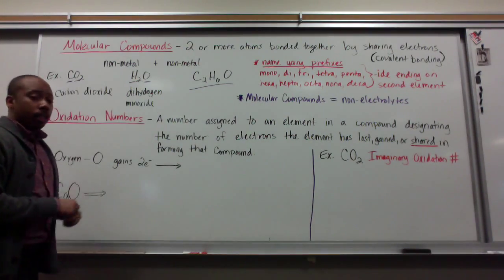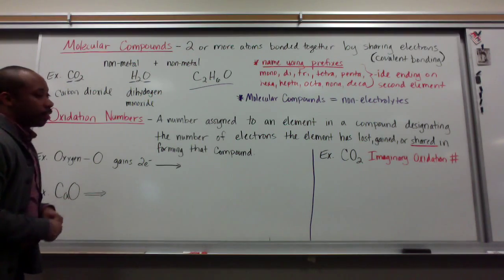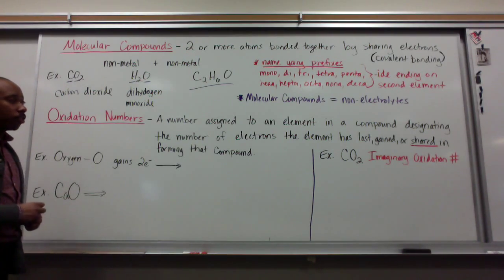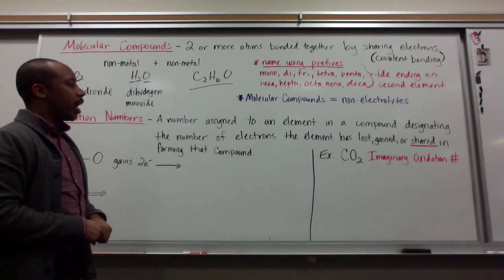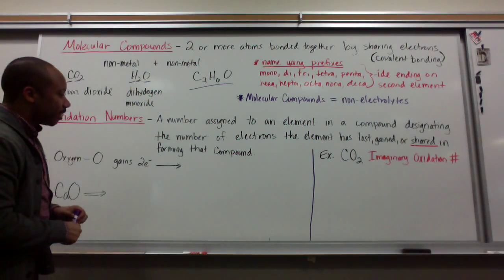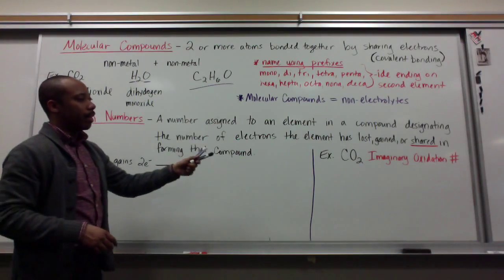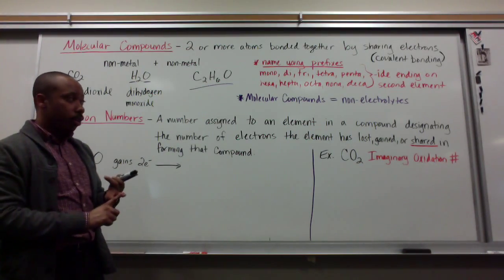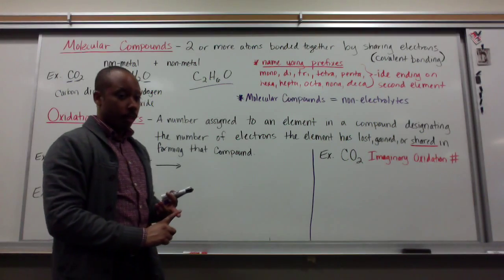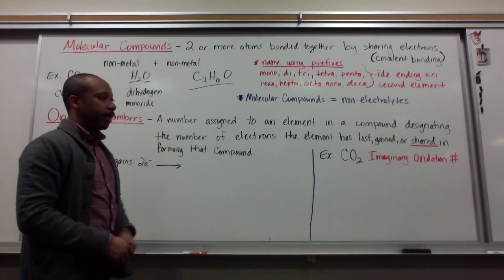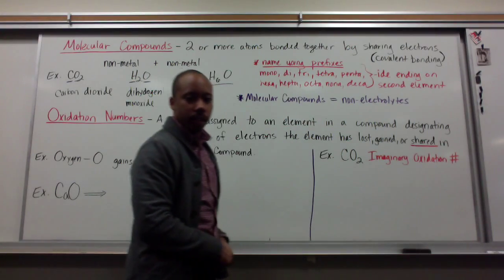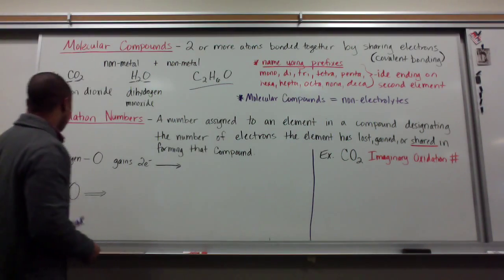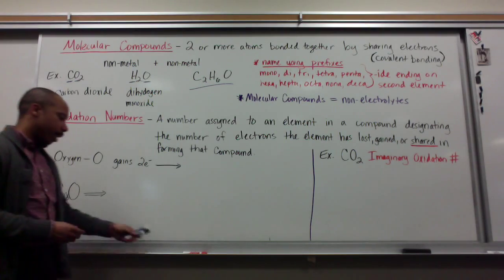Now, one concept that we talked about in our investigate is oxidation numbers. An oxidation number, essentially is a number assigned to an element in a compound designating the number of electrons the element has lost, gained, or shared in forming that particular compound. Let's do some examples of this.